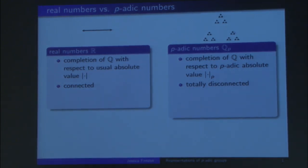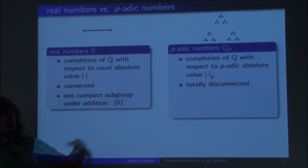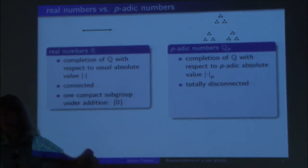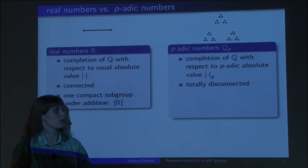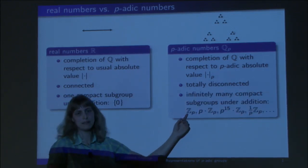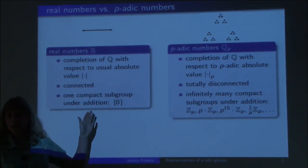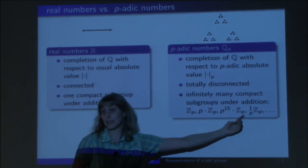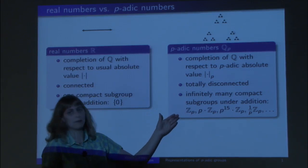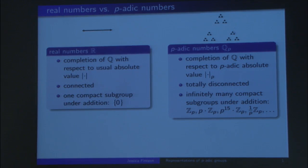That's very important for us. One important property is that the real numbers only have one compact subgroup, because if you take a compact subgroup that's non-zero, it has some element, it has all its multiples, and it's not compact anymore. But for the p-adic numbers, there are infinitely many compact subgroups. For example, we can take Z_P, which is just the completion of the integers — power series with no negative exponents of P. We can also take P·Z_P, P^n·Z_P, or P^{-n}·Z_P, and these form a neighborhood basis of zero.